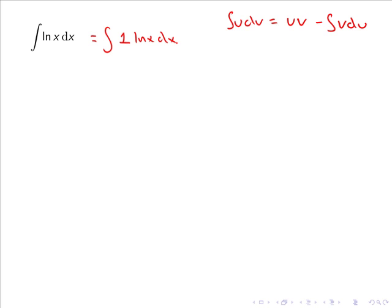Now we need to choose our u and our dv. As usual, we always choose our u as a function we do not know how to integrate. So we let u equal ln x and we let dv equal 1 dx.